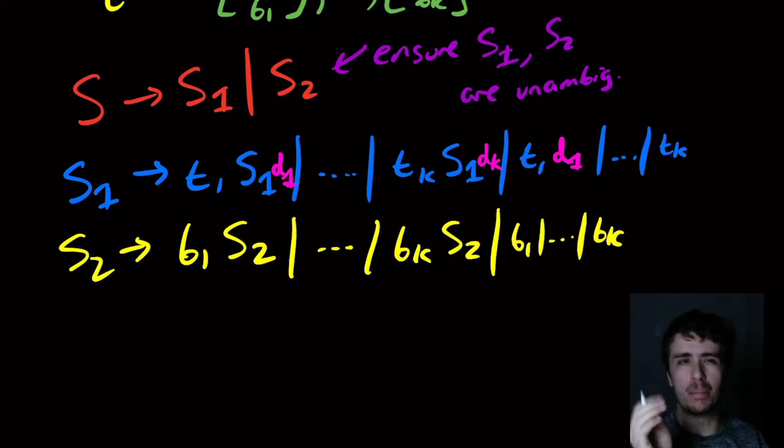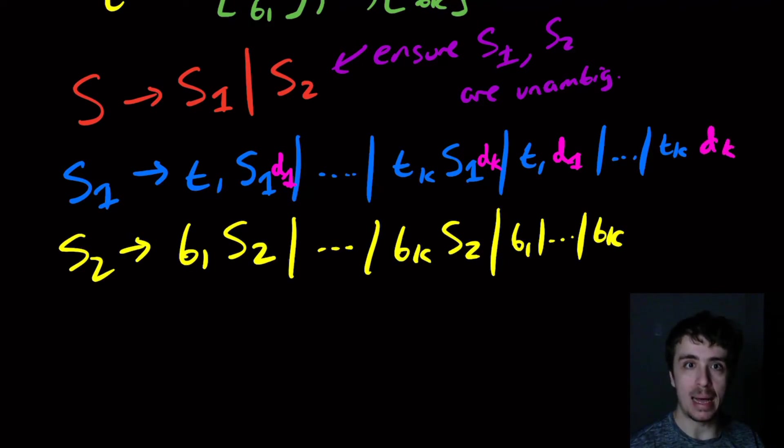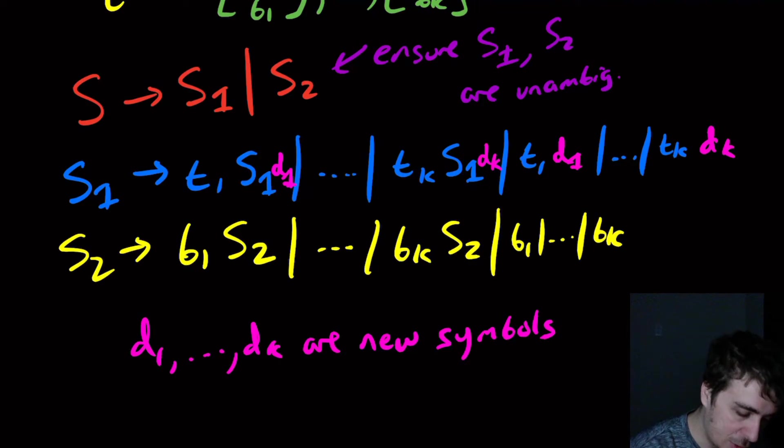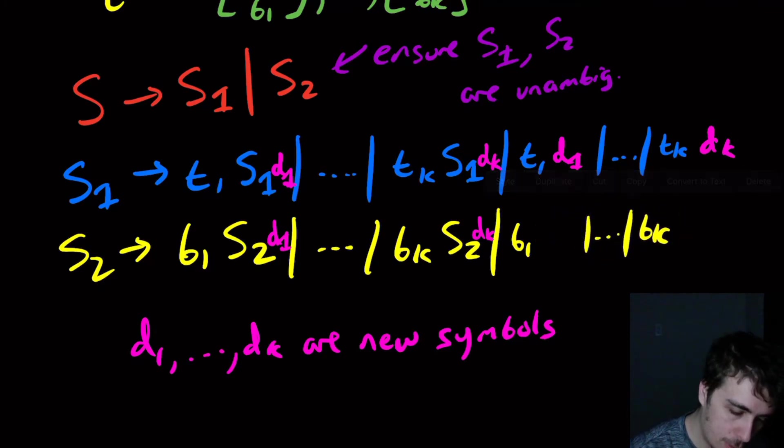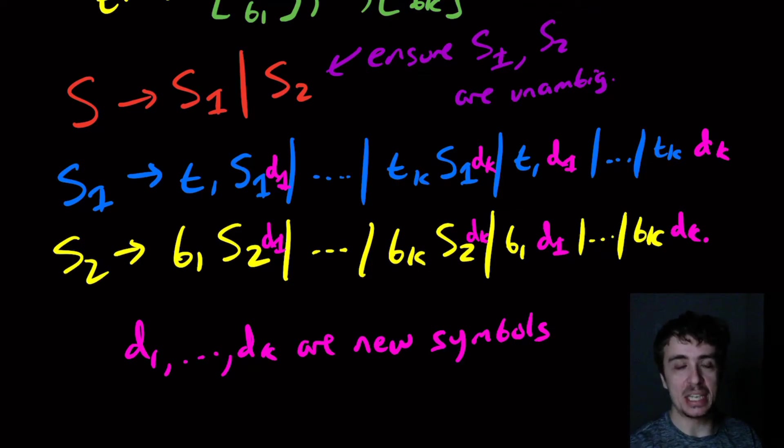What I'm introducing here are new symbols that are basically marking which of the rules we actually applied, which tiles we applied. Because in principle we could have the same top string and maybe different bottom strings, but the d values are going to disambiguate which rule we applied, which tile we selected. So the d1 through dk are new symbols—they're completely new symbols or you can make them new strings, it doesn't matter. We're going to do exactly the same idea downstairs, so I'm going to insert d1 right there, dk right there.